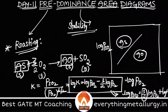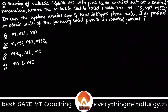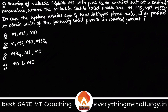Now let's look at a previous year GATE question which explains this more easily. The question: Roasting of metallic sulfide MS with pure oxygen is carried out at a particular temperature. The probable stable solid phases present are M, MS, MO, and MSO₄. Given that the system attains equilibrium and satisfies the phase rule, which combination of solid phases is possible in the roasted product?